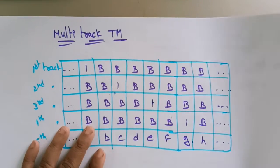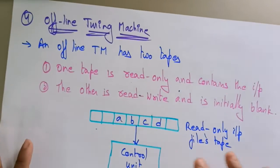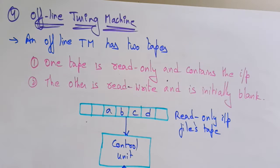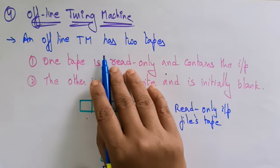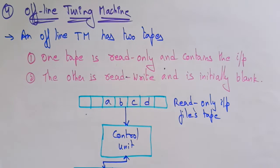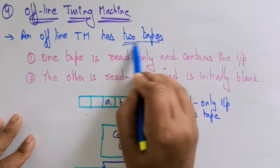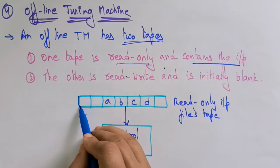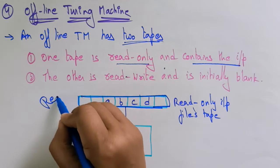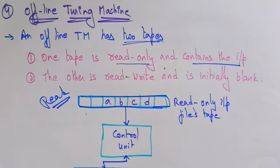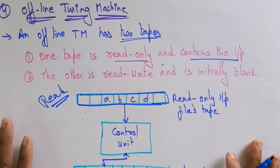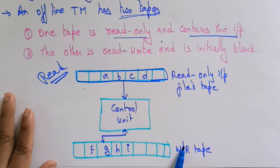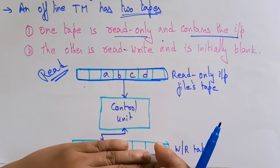Now coming to another variation of the Turing machine — the offline Turing machine. An offline Turing machine has two tapes. So far you have seen only one tape, or multi-tape, or multi-heads. But in the offline Turing machine we are using two tapes. One tape is read-only and contains the input. Whatever input is given, that input is stored on that read-only input tape, meaning it does not do any modification. The other tape is read-write and initially blank, so at the start the complete read-write tape is blank.